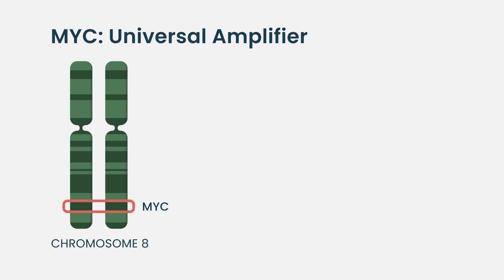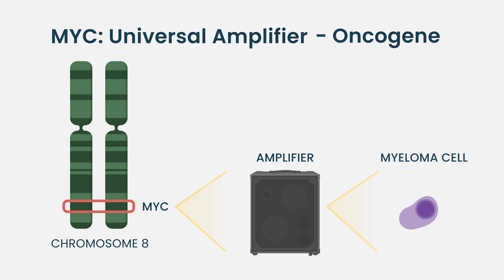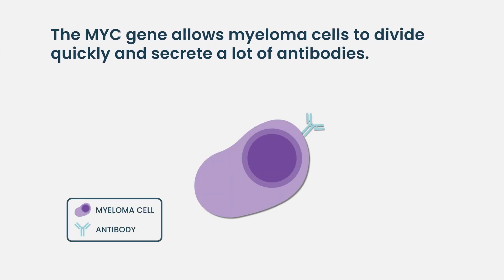MYC is called the universal amplifier. It's one of the oldest known oncogenes, and its function is to amplify whatever a cell is doing — and often in a cancer cell, that means proliferation. In myeloma, it also amplifies other things, such as the ability to make and secrete a lot of antibody.